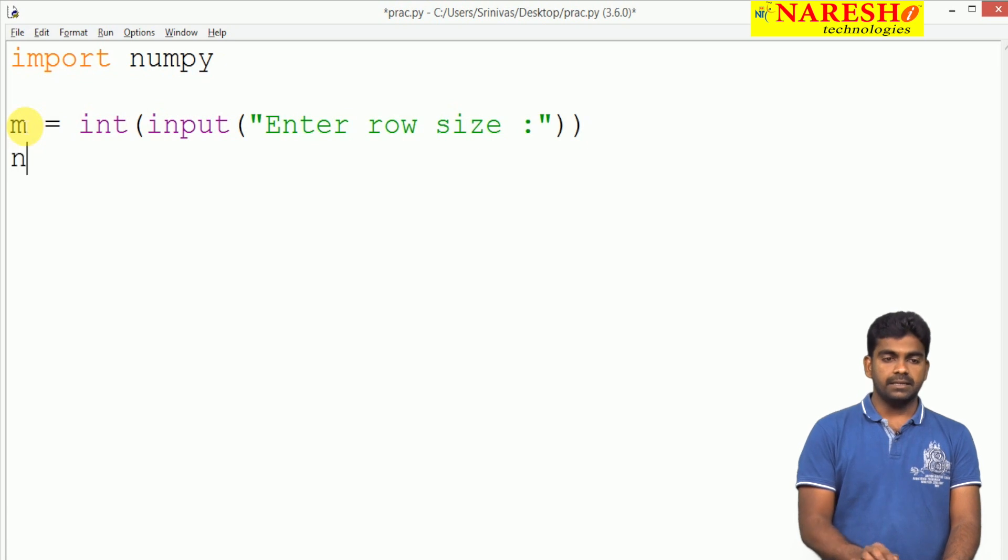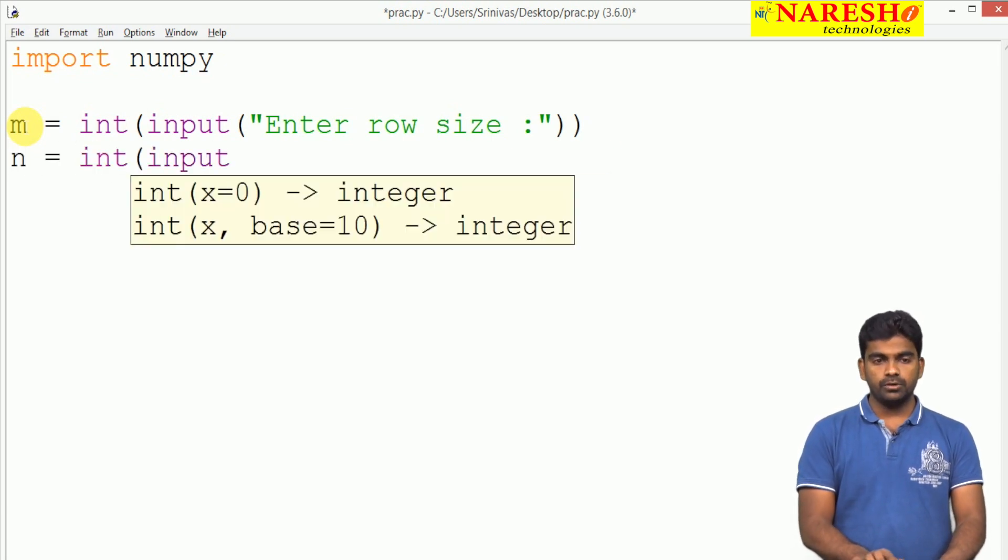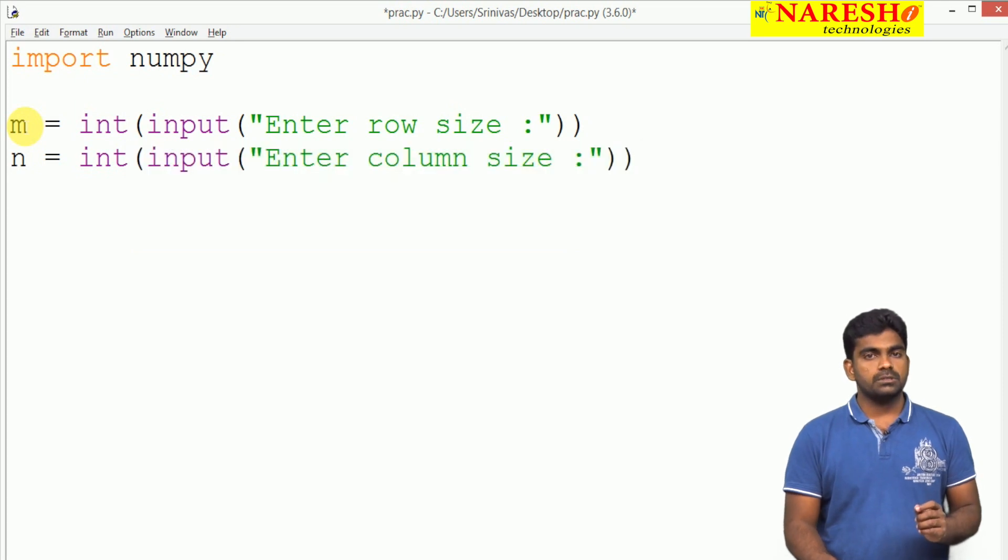Next, n equals integer of input 'enter column size'. We read both the number of rows and number of columns.